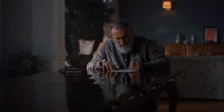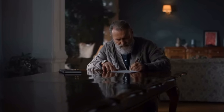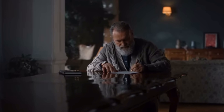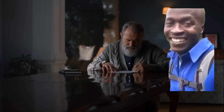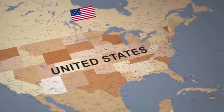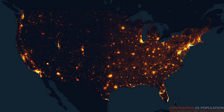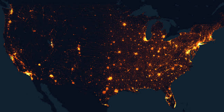Did you know about an American town with only one person living in it? You'll find out soon. This is the map of the United States, and this is the map of its population density. If we zoom in closely, we'll see that there's an unseen line running directly through the center of the country.